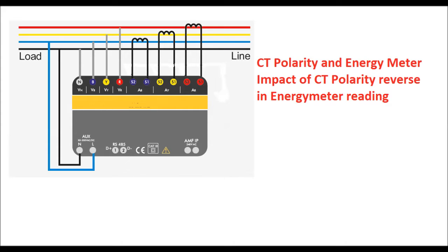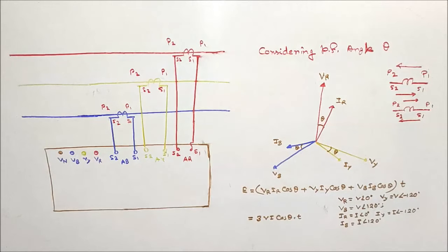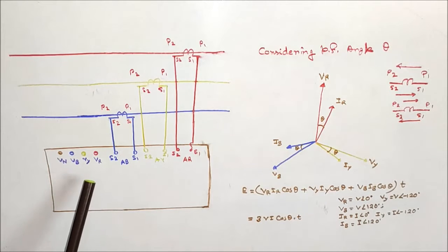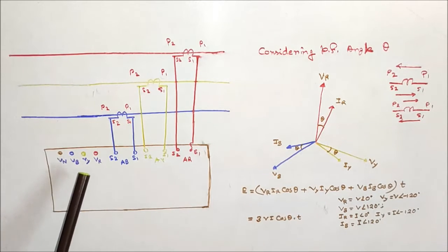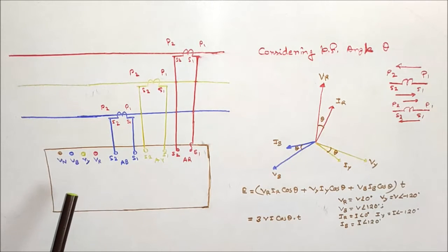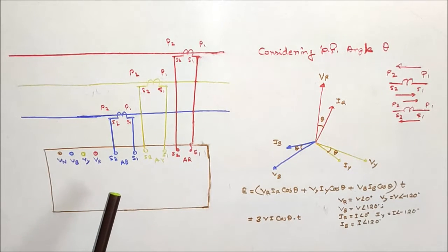In this diagram, a three-phase four-wire energy meter has been shown. The voltage input is red, yellow, blue, and neutral — that is why it is called a four-wire system. There also exists a three-phase three-wire system, where only red, yellow, and blue phase voltage input is taken, and only red and blue phase CT secondary input is taken to the energy meter.